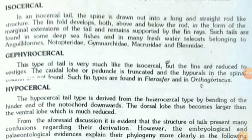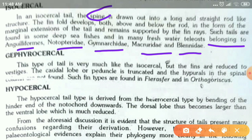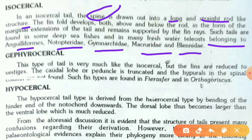The isocercal tail is one in which the spine is drawn out into a long, straight, rod-like structure. The fin fold develops both above and below the rod as marginal extensions of the tail, supported by fin rays. Such tails are found in some deep-sea fishes and in many freshwater teleosts belonging to Anguilliformes, Notopteridae, Gymnotidae, Macrouridae, Blenniidae, etc.